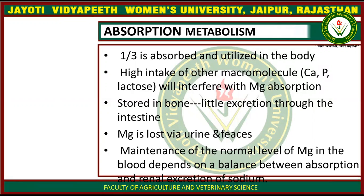Factors such as calcium, phosphorus, or lactose can interfere with and disturb magnesium absorption. When absorption is disturbed, magnesium is stored in bone with little excretion through the intestine. Magnesium is lost via urine and feces, with the maximum amount excreted through urine.